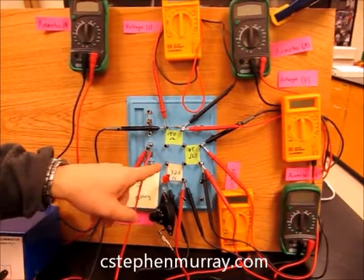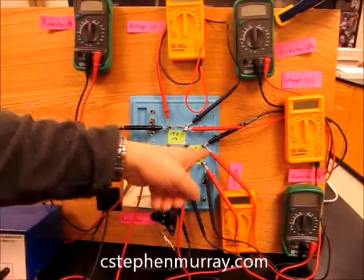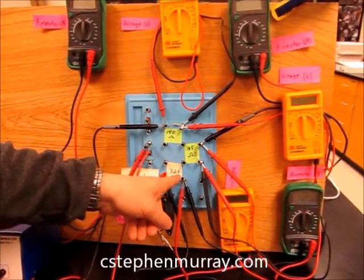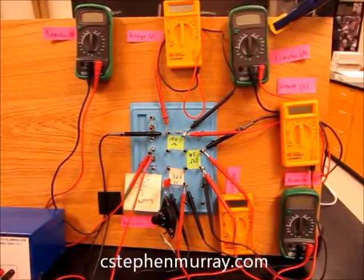Now notice we have three different, we have actually four different resistors. We have 75 and 150, so this one is half of this one. This one is just a little bit less than half of this one, and this one right here is a variable resistor so that I can change the resistance in the circuit.